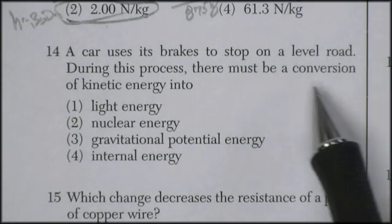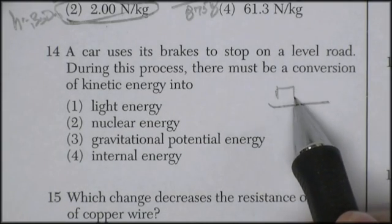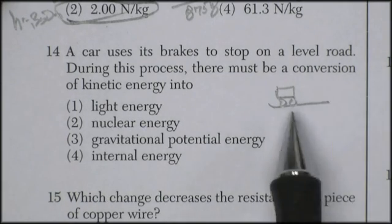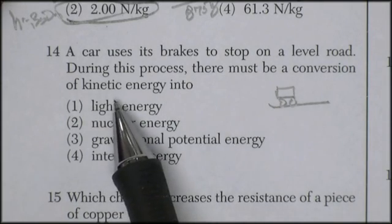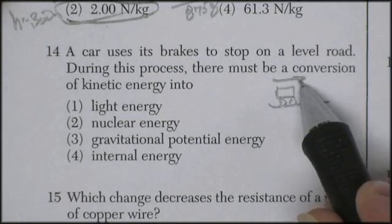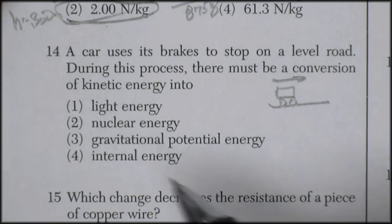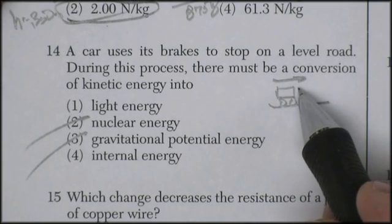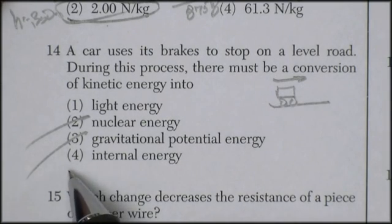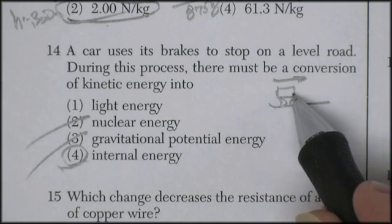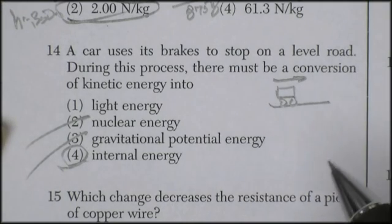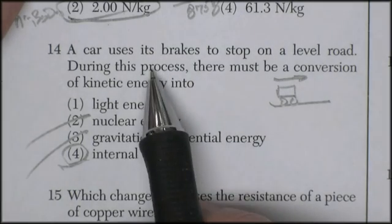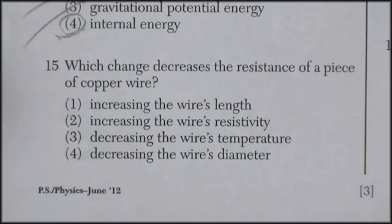Question 14. A car uses its brakes to stop on a level road. You've got a car, a perfect graphical representation of a Scion, stops on a level road. During this process, there must be a conversion of kinetic energy. Kinetic energy, well, it's on a level road so it's not going to be potential energy. We really hope it's not nuclear energy. It used to be heat, but now we just throw it into the category of internal energy. The individual molecules in the brake pads are getting hotter. That's why they're made of special material. And if you've got racing cars, you have a special braking system. Because that kinetic energy has turned into heat, internal energy.